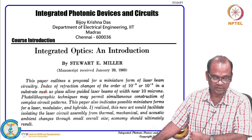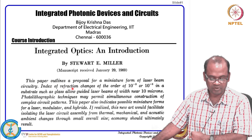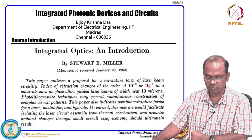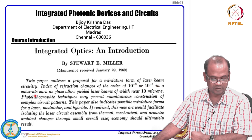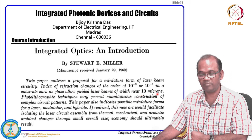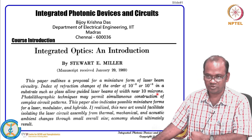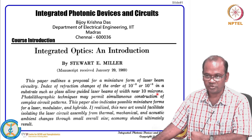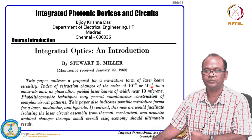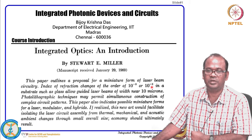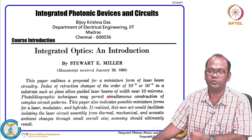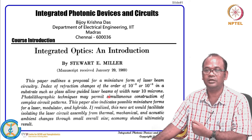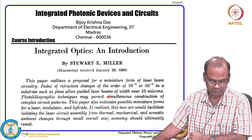The paper states that laser beam circuitry with refractive index changes of the order of 10⁻² to 10⁻³ in a substrate such as glass can allow guided laser beams of width near 10 microns. Any refractive index change with a cross section of 10 microns in that order, in a glass substrate or any other material platform, can enable conceiving laser beam circuitry. That was the first proposal.